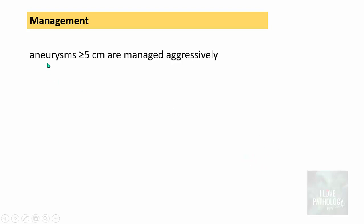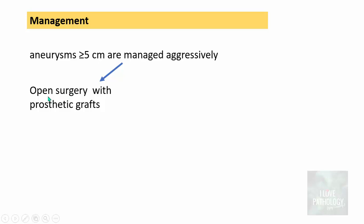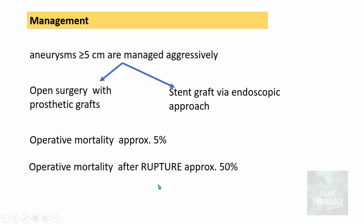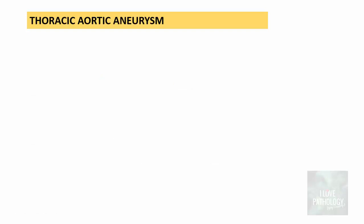Management: aneurysms more than 5 cm are usually managed aggressively by open surgery with prosthetic grafts or stent graft via endovascular approach. The operative mortality, even if asymptomatic, is approximately 5%. But if the operation is done after rupture, mortality is approximately 50%.